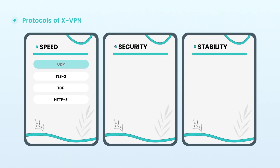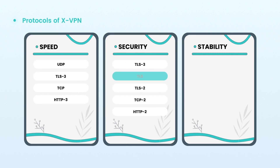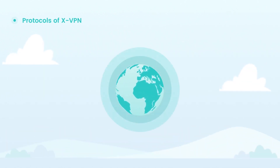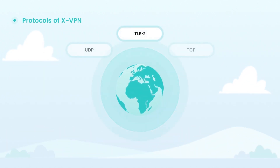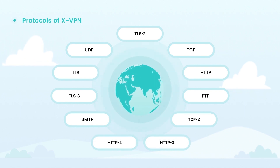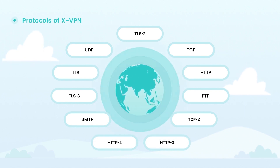For example, UDP is ideal for high-speed usage like gaming. TLS is the best for high network security requirements, while TCP ensures more connection stability. Nevertheless, 11 powerful protocols ensure that users can use XVPN service under any network in the world, no matter where they are.